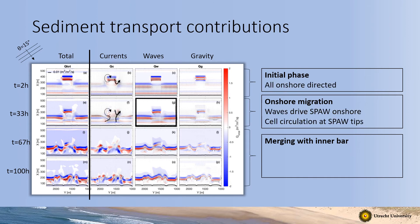In the initial phase after two hours of simulation, we see onshore-directed sediment transport related to all components. During the onshore migration, as the spore starts to obtain a more natural shape, the wave-driven components drive the spore onshore, with erosion at the seaward side and accumulation at the landward side. The current contribution shows circulation around the tips of the spore, and due to the slightly oblique wave incidence from the left, a weak rip current develops on the right side of the spore while a clear circulation current is visible on the left side.